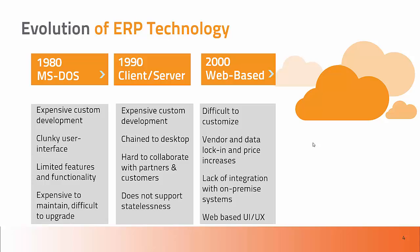We then went through a paradigm shift into the 1990s when SAP introduced a concept called client-server enterprise resource planning. Most people don't know it, but SAP originally started off as a solution for small businesses. Client-server was a situation where you had your data stored on a server and the programs running on your client machine. But the same challenges were there — it was very expensive to do custom development, you were chained to the desktop, and if the network connection went down, you lost your data.